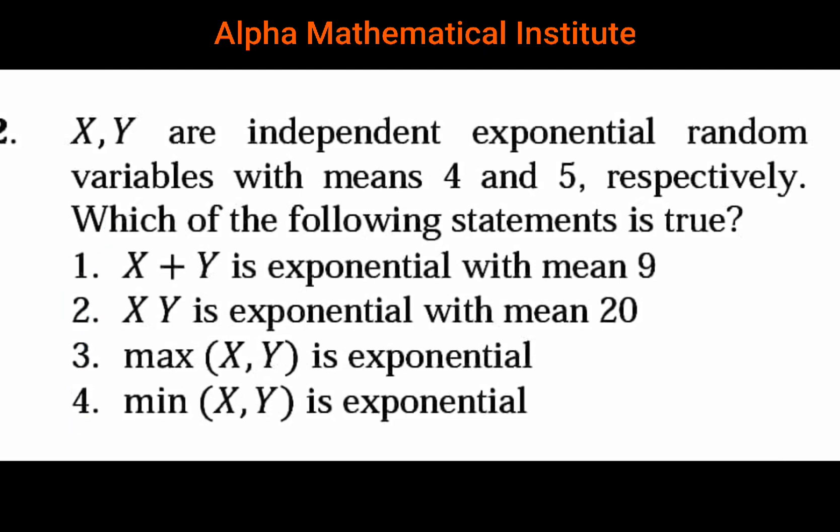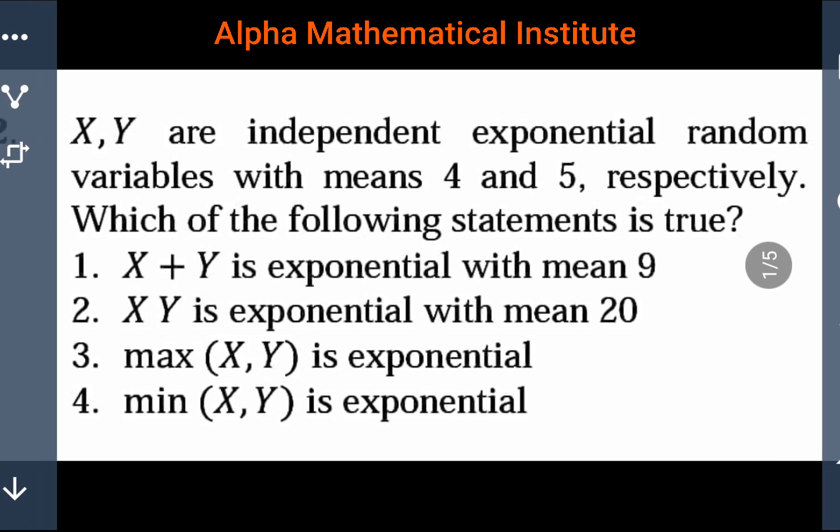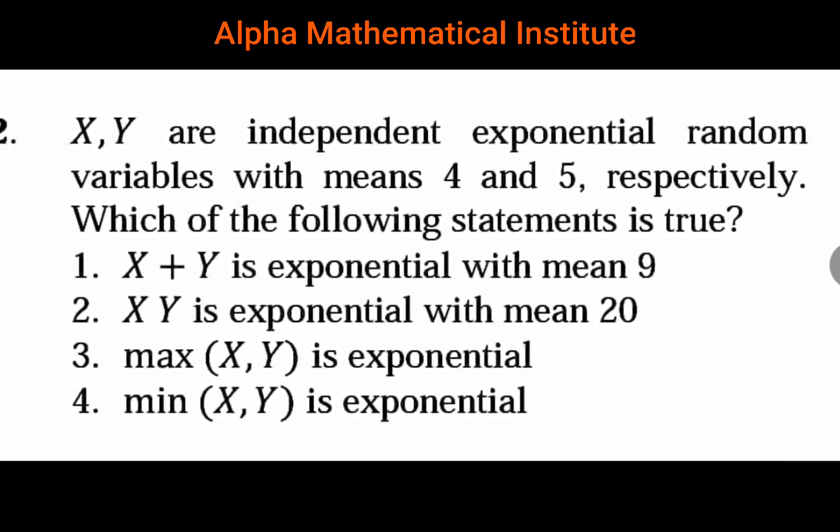In this problem it is given X and Y are independent exponential random variables with means 4 and 5 respectively. We need to identify which of the following 4 options are correct. So before answering this problem, we need to understand some basic facts from statistics. Let us look into those facts.